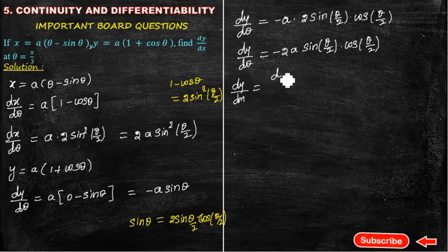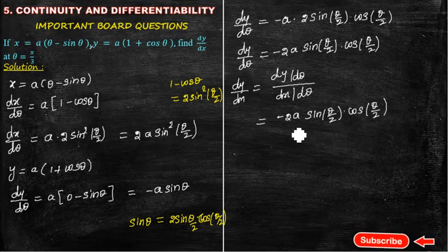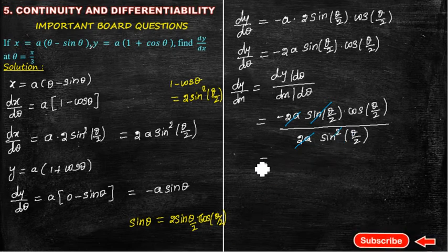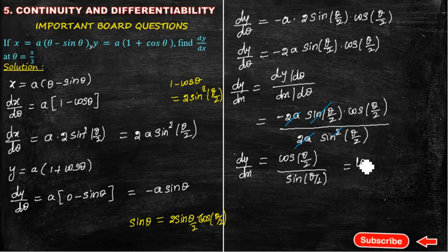Now dy/dx = (dy/dθ) ÷ (dx/dθ). So dy/dx = [-2a·sin(θ/2)·cos(θ/2)] ÷ [2a·sin²(θ/2)]. We cancel 2a and one sin(θ/2) term. Cos(θ/2) divided by sin(θ/2) gives cot(θ/2). Therefore dy/dx = -cot(θ/2).